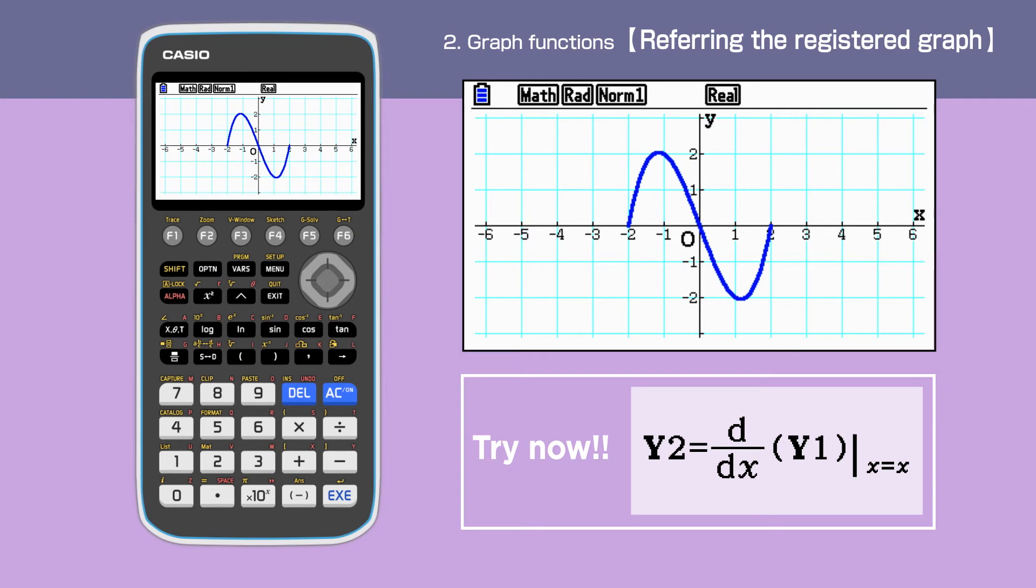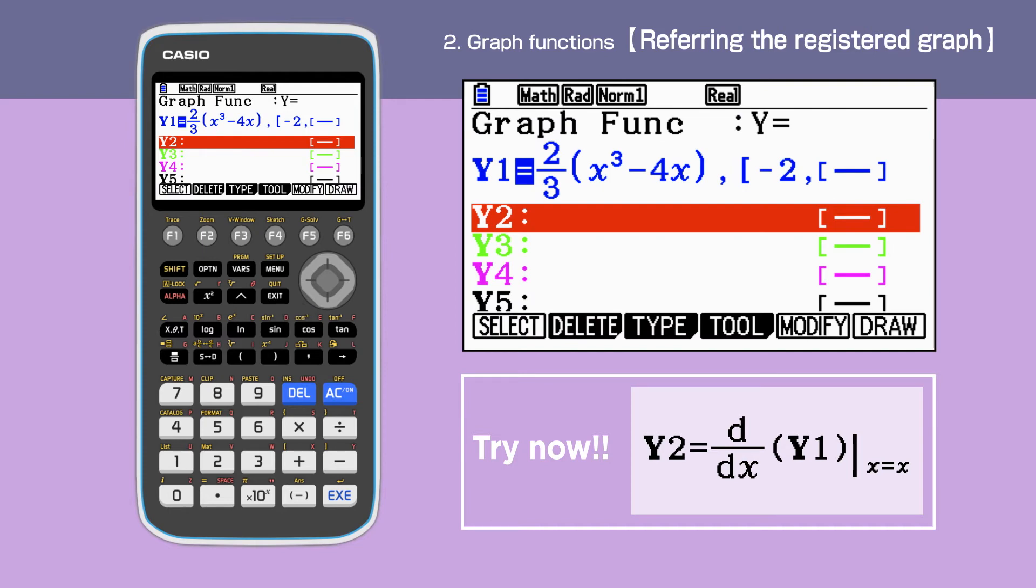Next example, we will draw the derivative function of y1. Press exit to go back to the graph function screen. Display the option command menu by pressing the option key. Then press F2 to open the calculation command.